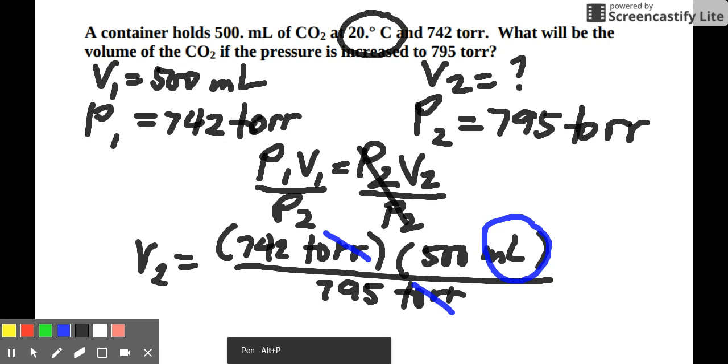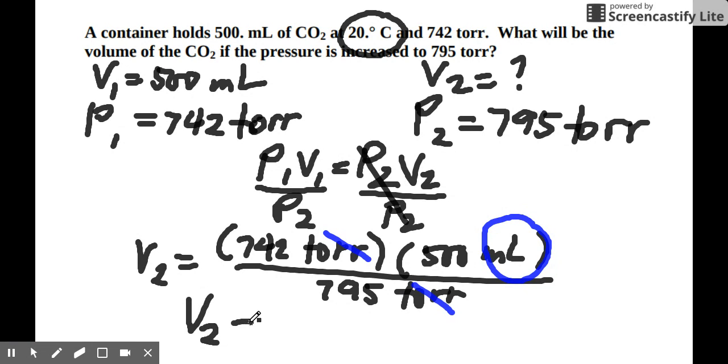So you would, in putting this in the calculator, you'd see that V2 is equal to 467 ml, and you have to put the type of gaseous substance, in this case, it's carbon dioxide.